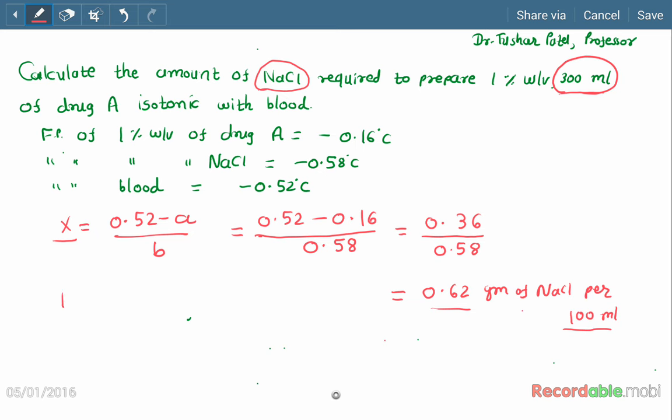So 100 ml of the solution requires 0.62 grams of sodium chloride. What about 300 ml of the solution? How many grams of sodium chloride is required? It equals 300 multiplied by 0.62 divided by 100. So that equals 3 multiplied by 0.62, equals 1.86 grams of sodium chloride.